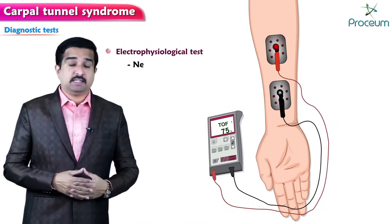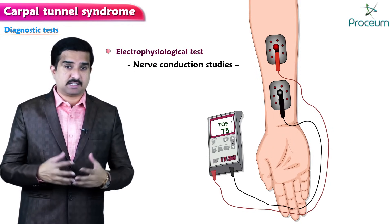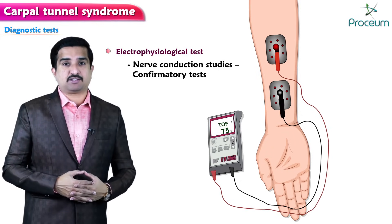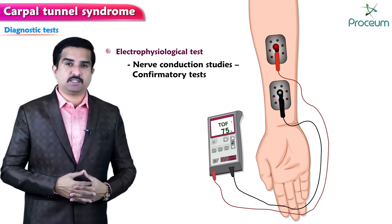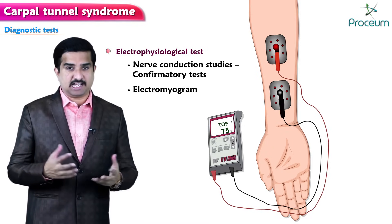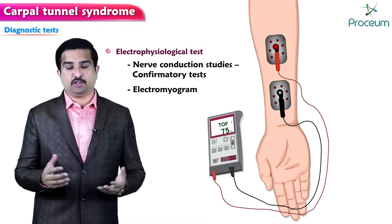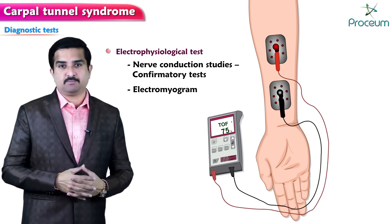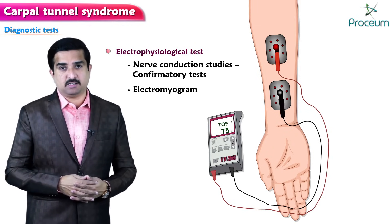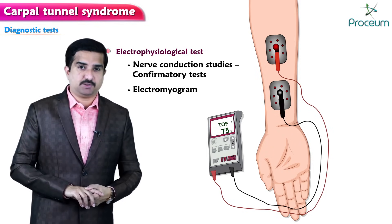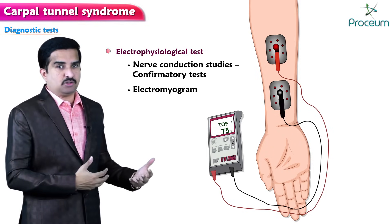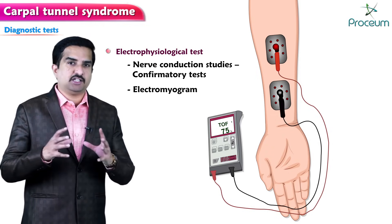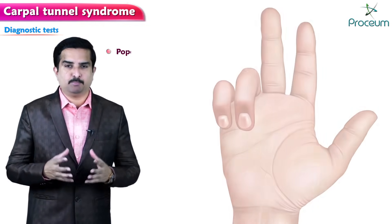For electrophysiological diagnosis of CTS, nerve conduction studies are considered the confirmatory test. Prolongation of the distal motor and sensory latency can be identified. An electromyogram explains the pattern of neurogenic disorder, showing abnormal spontaneous activity or decreased activity potentials with large amplitude.